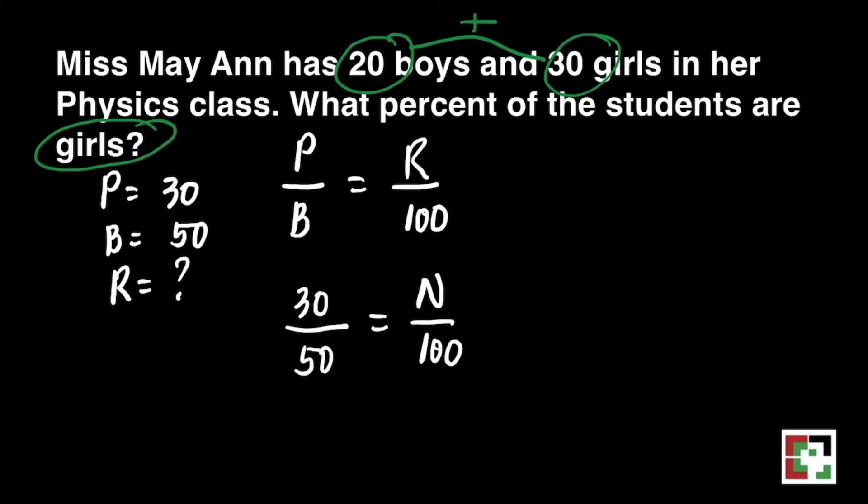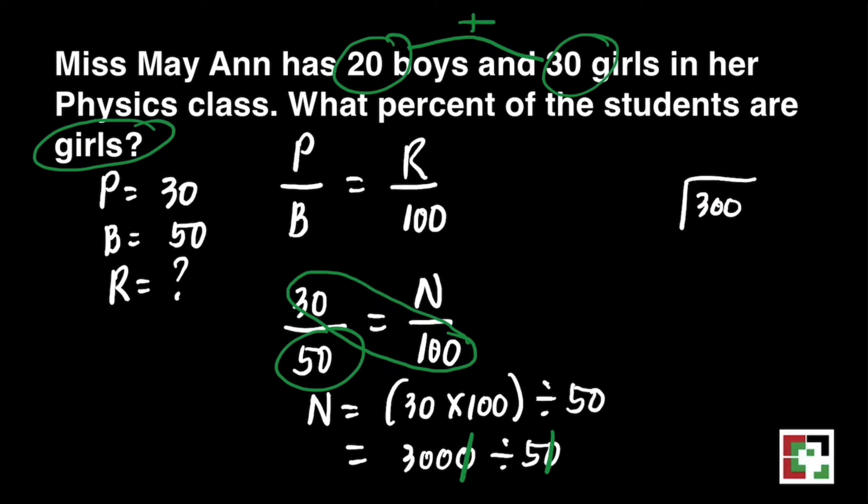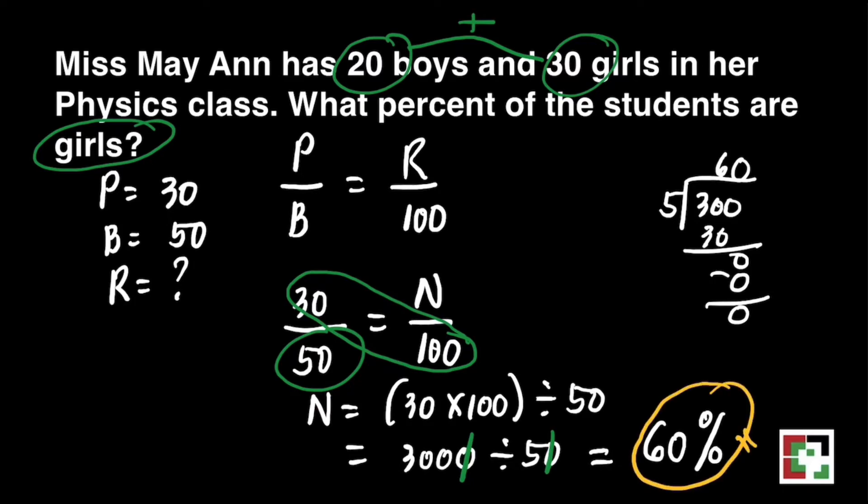Let's just substitute. How to find for N? Just do cross multiplication. 30 times 100 divided by 50. Then we can just multiply 3,000, then divided by 50, just cancel two zeros there. We'll have 300 divided by 5 will give us 60. It means 60% of the students are girls.